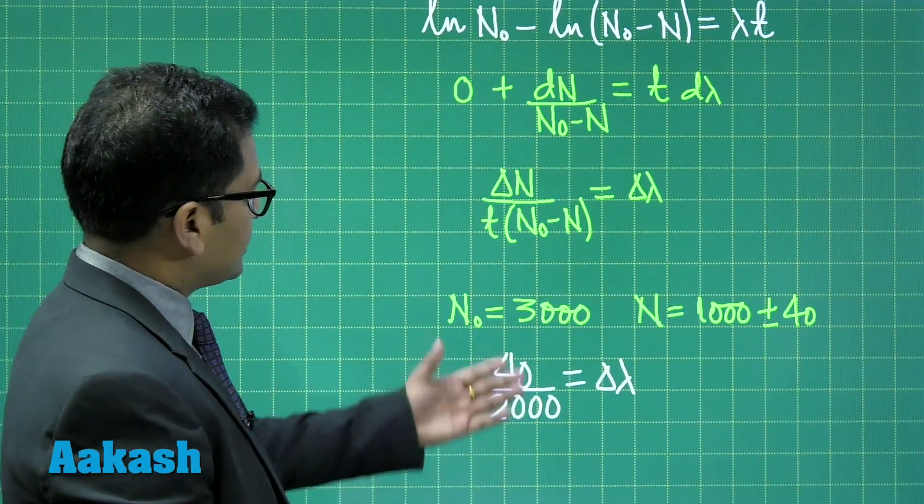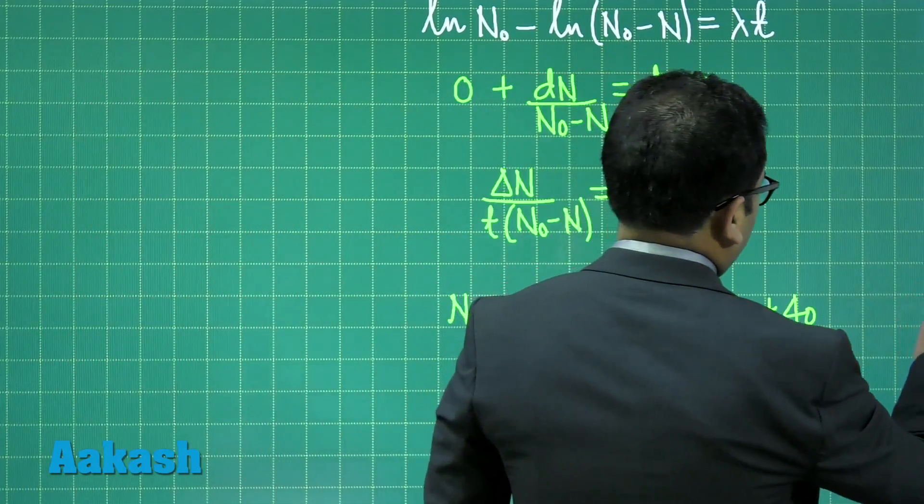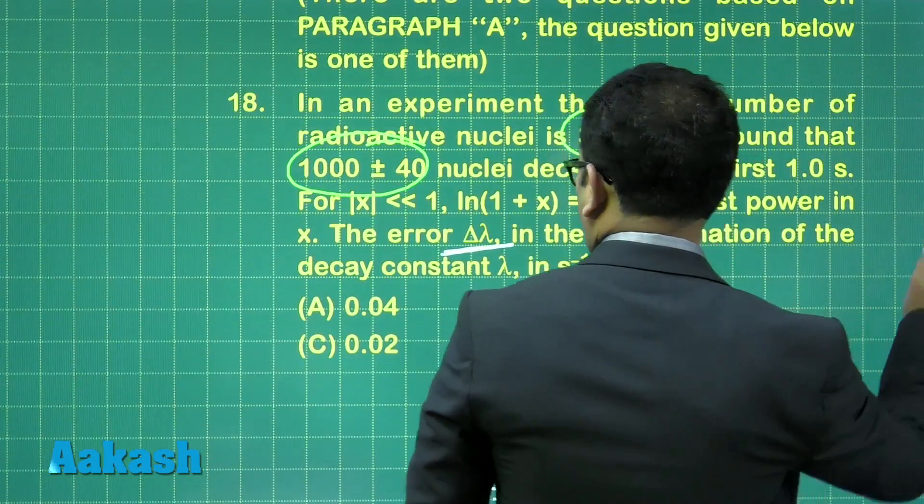All right, so here is the value, 40 divided by 2000, and that would, of course, be equals to 0.02.